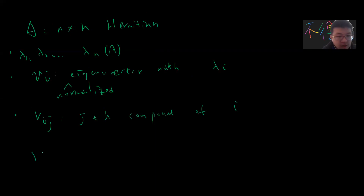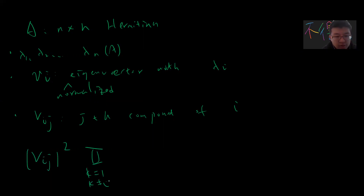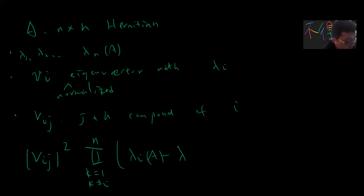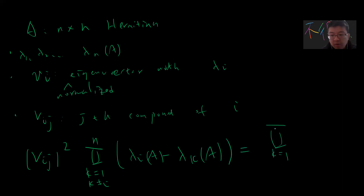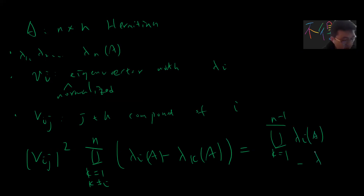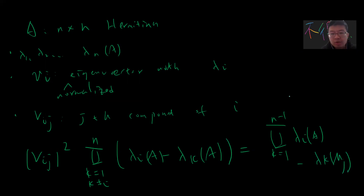This theorem tells you that |v_ij|^2 times the product over k from 1 to n, k not equal to i, of (lambda_i(A) minus lambda_k(A)) equals the product over k from 1 to n-minus-1 of (lambda_i(A) minus lambda_k(M_j)), where M_j is the minor obtained by deleting the j-th row and j-th column.